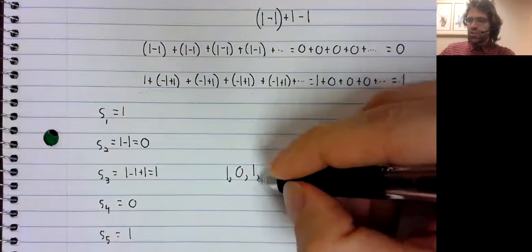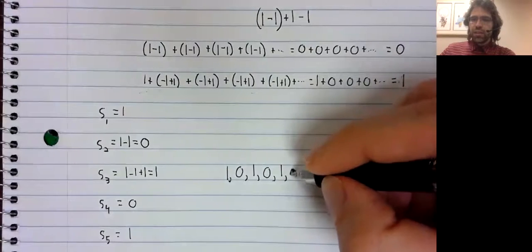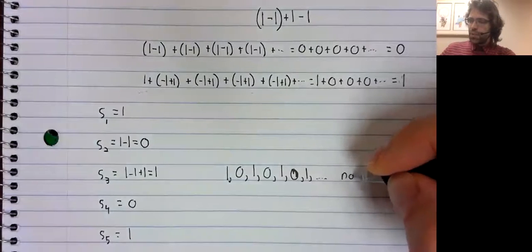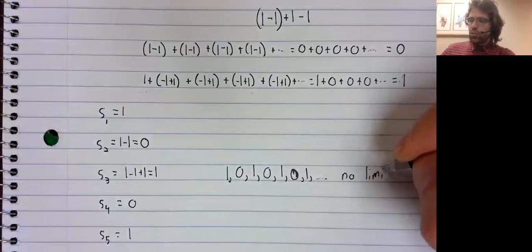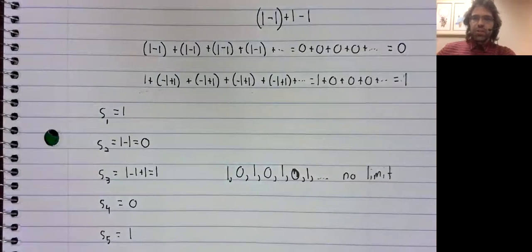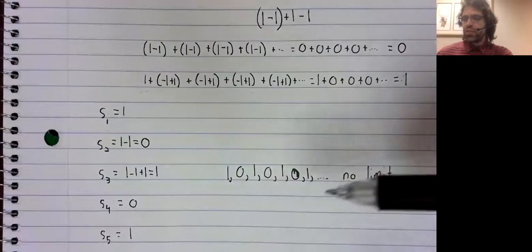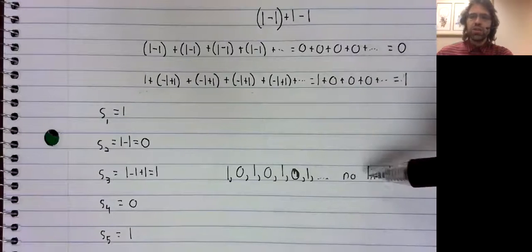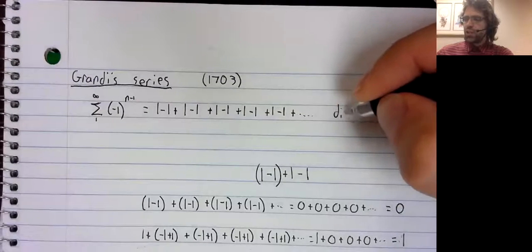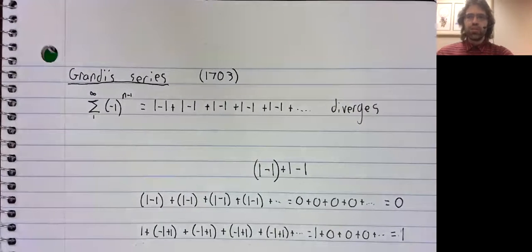This sequence is not approaching any number, so the limit of the partial sums does not exist. The sum of the series is the limit of the partial sums. If these partial sums don't have a limit, this series diverges.